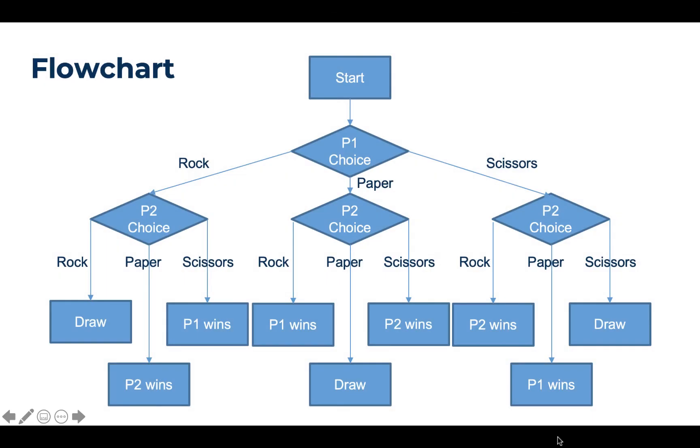So let's draw a flowchart to illustrate the rules. The first player has three choices: rock, paper, and scissors, while the second player also has three choices. Each combination of choices ends up with a draw or one of them wins the game.